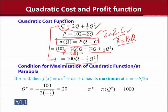P into Q minus C is what we have done, the simple substitution in order to get a consolidated form of the profit function. After simplification, we have obtained this form of quadratic profit function, which is actually due to the quadratic cost function that we have used in the process. We have a shortcut way to get to the maximization of such a profit function. This condition says that if a is less than 0, then f(x), the quadratic function, has its maximum at x equals minus b over 2a.